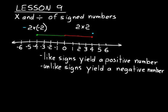When working with multiplication and division of signed numbers, there are a couple of rules to remember. Whenever you multiply like signs together — whether positive times positive or negative times negative — the result is a positive number. Unlike signs yield a negative number, like our two times negative two example, which equals negative four. This works in both multiplication and division.